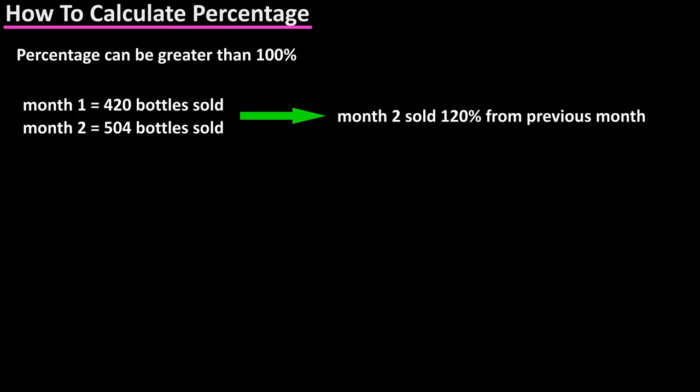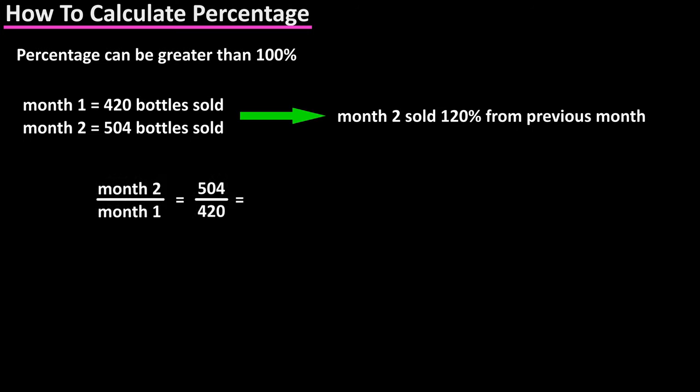We would say they sold 120 percent of what they did the previous month. The reason we would say this is because we could put the first month sales in the denominator and the second month sales in the numerator, and dividing out we get 1.2. If we want to look at this as a percentage, we then multiply by 100 percent, which gives us a total of 120 percent.